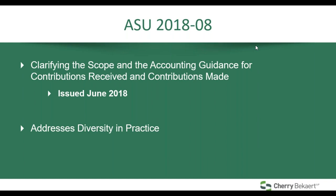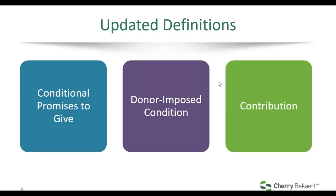We really want to make sure that we understand the implications of this standard. There were some changes in definitions in the master glossary. Starting with the concept of a conditional promise to give: under the old definition, it focused on a promise to give that depended on the occurrence of a specified future and uncertain event to bind the promisor — really focused on what we would consider probability, that uncertainty around a future uncertain event. Under the new standard, they move away from that probability assessment. The new definition is a promise to give that is subject to donor-imposed conditions.